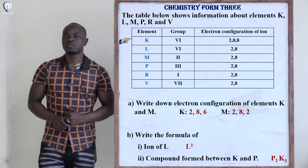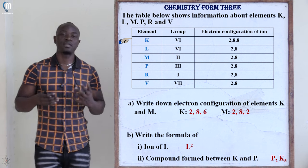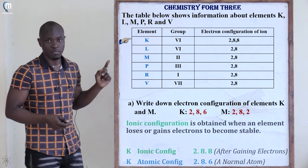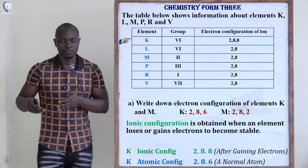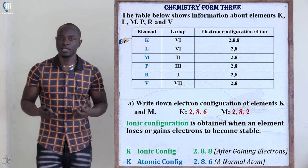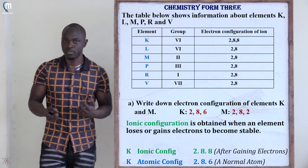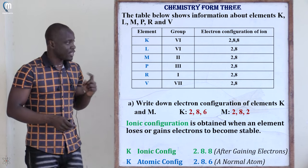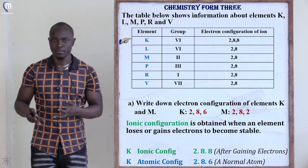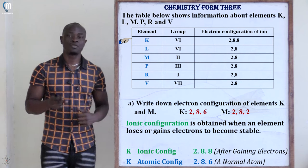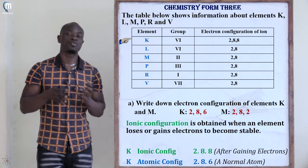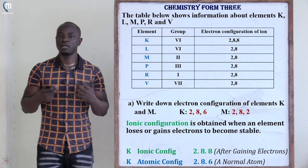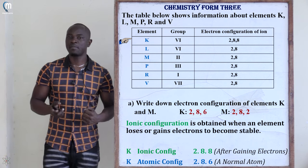Why is the configuration of element K 2,8,6? The ionic configuration given for element K in the table is 2,8,8. Remember, an ionic configuration is obtained after the element has either gained or lost electrons. Element K is in group number six. For group six elements — oxygen and sulfur — the atomic configuration of oxygen is 2,6, while sulfur is 2,8,6. These elements react by gaining two electrons to become stable.